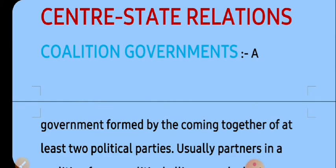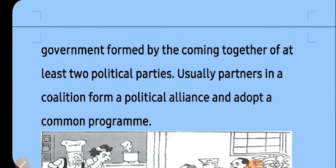Now let's discuss center-state relations and how they have evolved since India got freedom. First, what is a coalition government? A coalition government is a government formed by the coming together of at least two political parties. Usually, partners in a coalition form a political alliance and adopt a common program with similar interests.